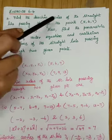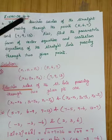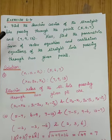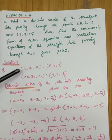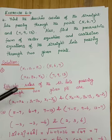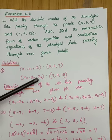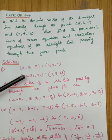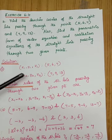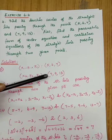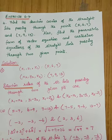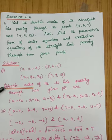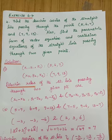First, what is asked? Direction cosines of the straight line passing through the points. Two passing points are given. We will take the first point as (x1, y1, z1) and the second point as (x2, y2, z2). Before moving to the direction cosines, we have to find the direction ratios of the straight line.